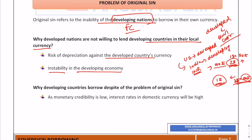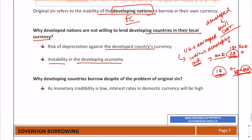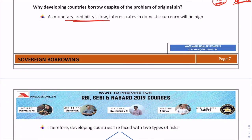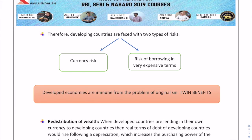There is also instability in developing economies and no clear economic policies. To avoid these risks, developed countries are not willing to lend in the developing country's local currency. Why do developing countries still borrow from developed nations despite this? Because monetary credibility is low in developing countries, domestic interest rates are very high. So they must choose between currency risk from foreign borrowing or the high cost of borrowing domestically.